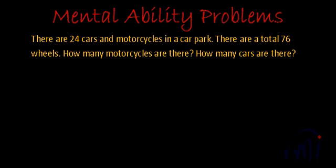This is a very simple problem. We have total 24 cars and motorcycles all together, and there are total 76 wheels. As all of us know, cars have 4 wheels and motorcycles have 2 wheels each.